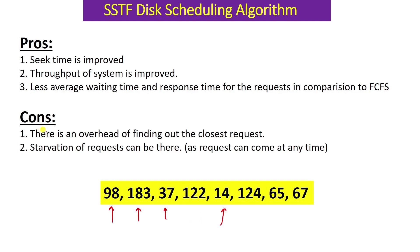Disadvantages of SSTF: First, there is increased overhead. In SSTF we must always find differences between the current head position and every pending request - for example subtracting 98 minus 53, 183 minus 53, and so on - to find the minimum each time. This overhead of finding the closest request was not present in FCFS, so it is a disadvantage.